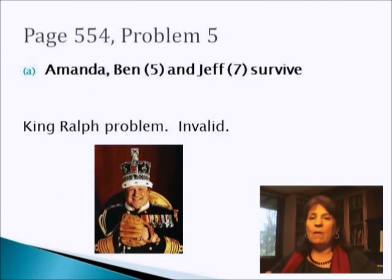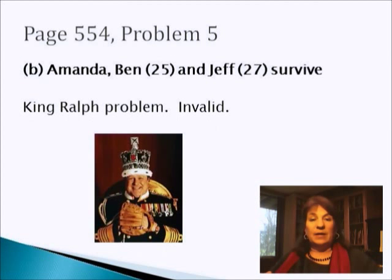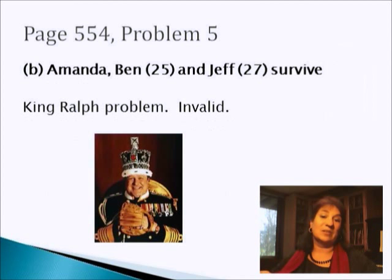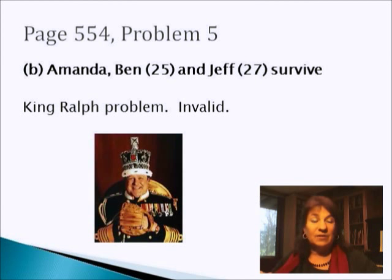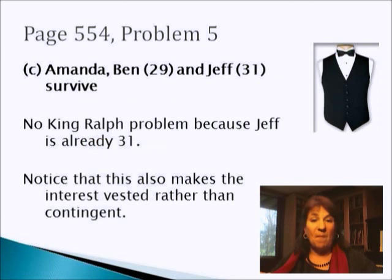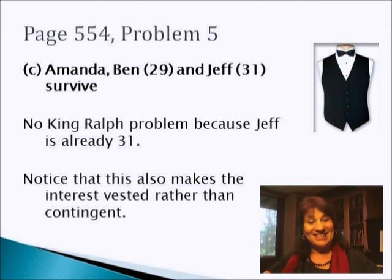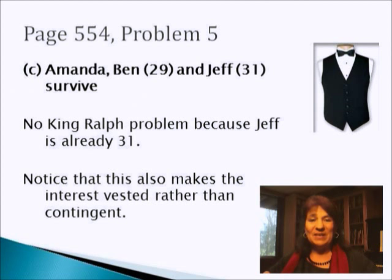So what if Amanda had two children who survived at the beginning — Ben and Jeff, age 5 and 7? That still gives us the King Ralph problem, it's invalid. What if those two kids are almost there — it looks like it's only going to be a couple years? We still have the King Ralph problem. Amanda could have a baby, and then Amanda, Ben, and Jeff could take the final family portrait. That's a King Ralph problem, so it's invalid. What if Amanda's two kids are a little older — Ben is 29 and Jeff is 31? Now we don't have a King Ralph problem anymore, because Jeff is already 31. In fact, this interest is vested — this was the first child to reach age 30 and one of them already did. So even though it's a future interest, it's a vested future interest, and that means we don't have a problem.